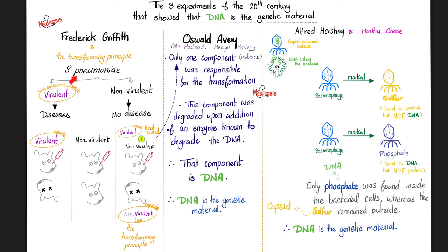Here is how it went down. He was working with Streptococcus pneumoniae bacteria. This bacteria has many types. One type is virulent, which means it causes disease. The reason it is virulent is that it possesses a smooth polysaccharide capsule, which helps it evade the host's macrophages and immune system. Versus the non-virulent — no smooth capsule, that's why it's rough — it does not cause any diseases because it does not have the virulence factor known as the capsule.